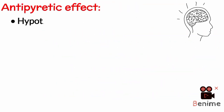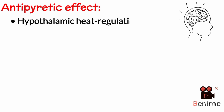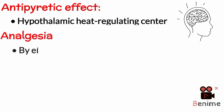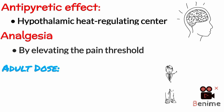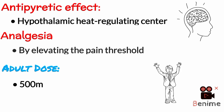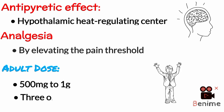Paracetamol produces its antipyretic effect by acting on the hypothalamic heat-regulating center in the brain, and produces analgesia by elevating the pain threshold. The usual oral adult dose of paracetamol is 500mg to 1g, taken 3 or 4 times a day.